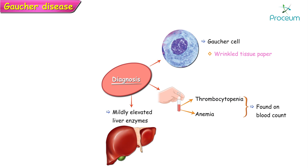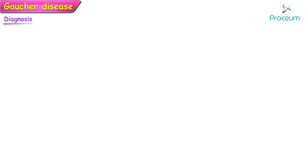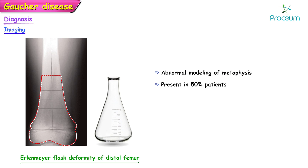Liver enzymes may be mildly elevated and serum angiotensin-converting enzyme may also be increased. Acid phosphatase activity, particularly the tartrate-resistant isoenzyme, is elevated. On imaging, the characteristic Erlenmeyer flask deformity of the distal femur — caused by abnormal modeling of the metaphysis — is seen in about half of affected patients, although this finding is not specific for Gaucher's disease.